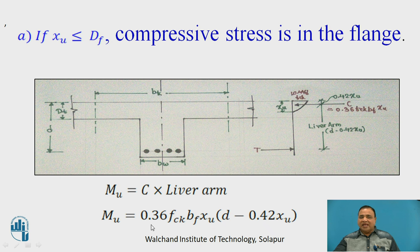Therefore, Mu is given by C into lever arm, where C is 0.36 FCK Bf into Xu, lever arm is D minus 0.42 Xu. Here you can find this is lever arm and this is C, the compressive force.